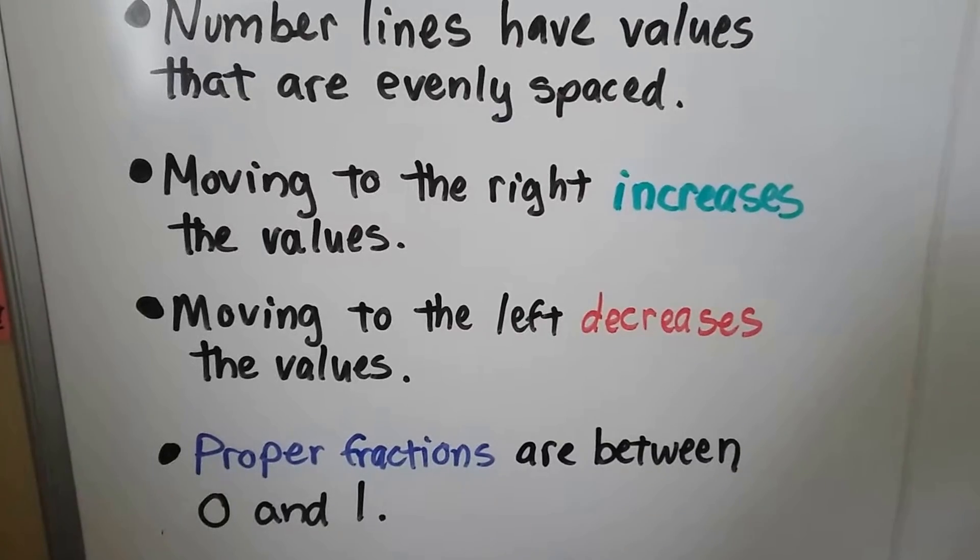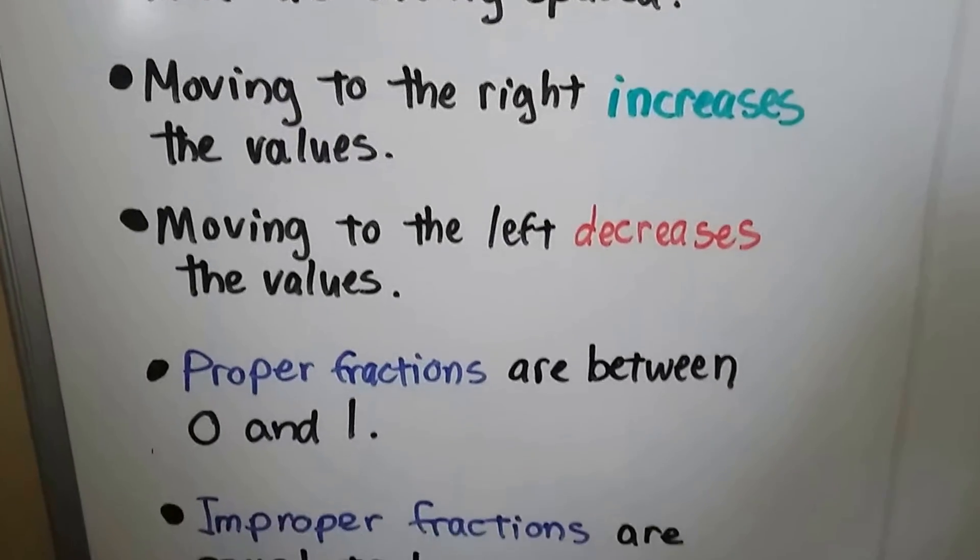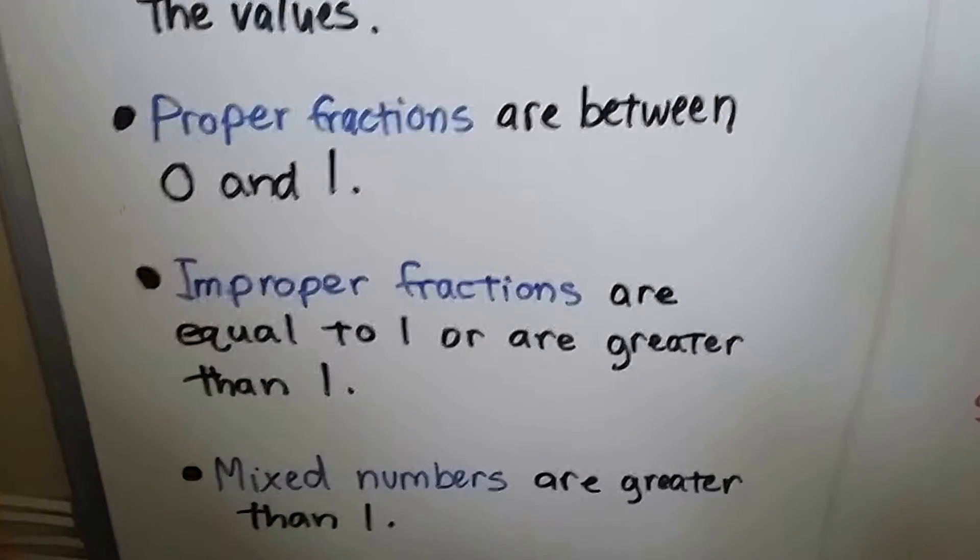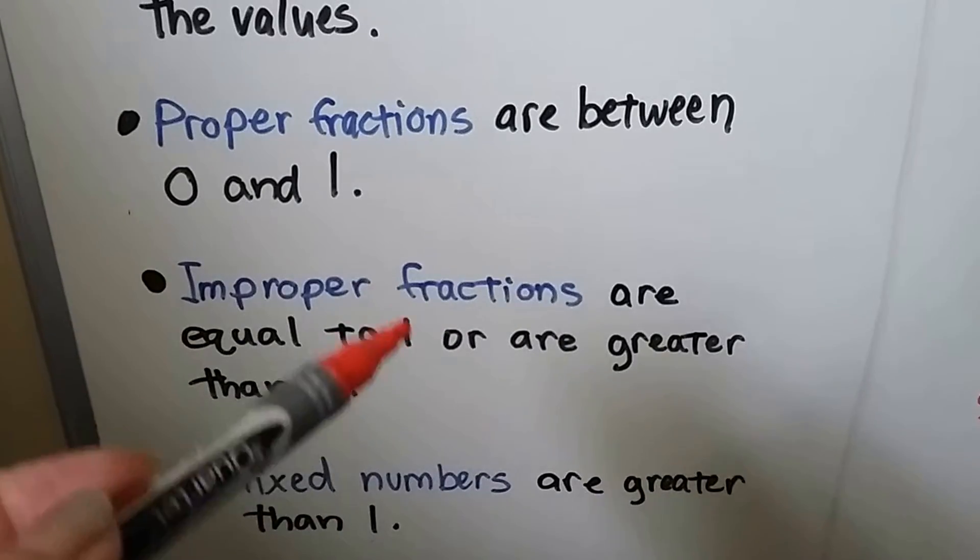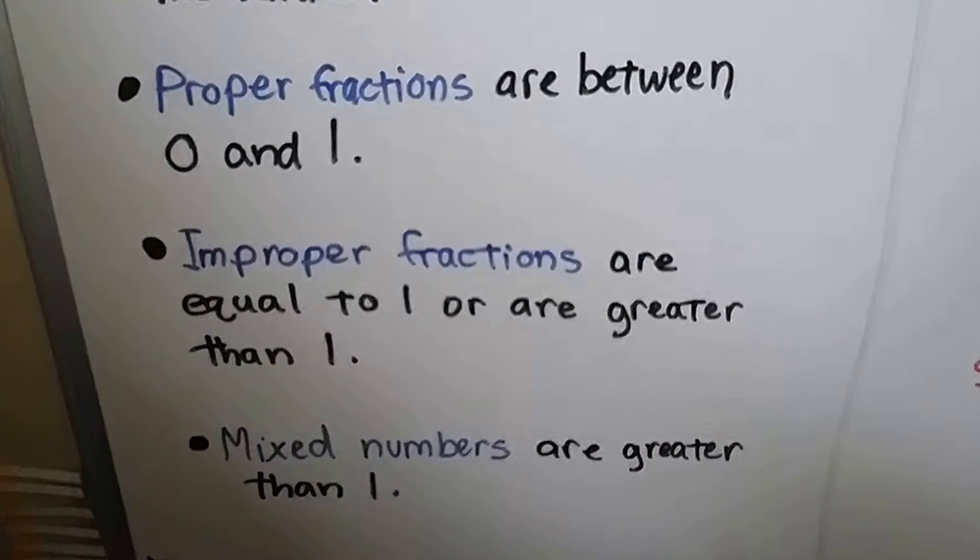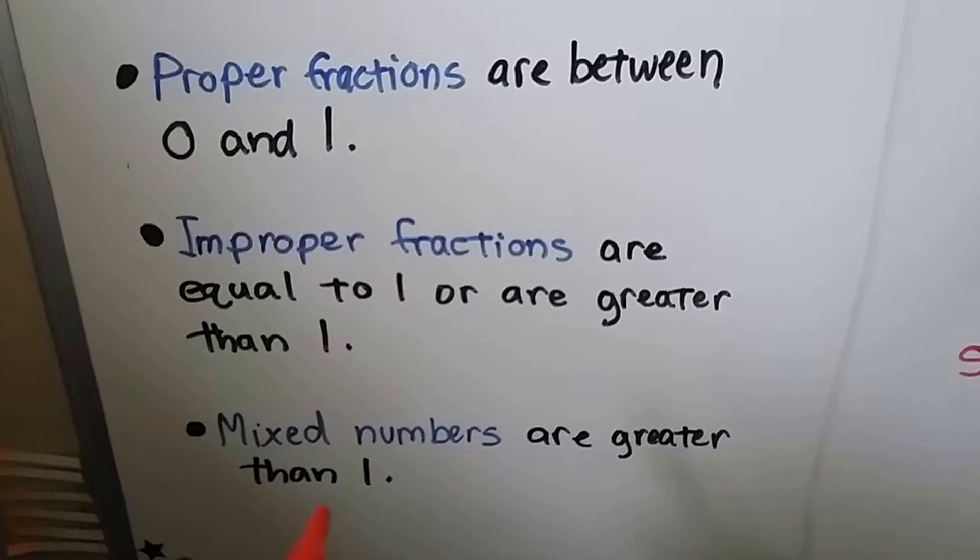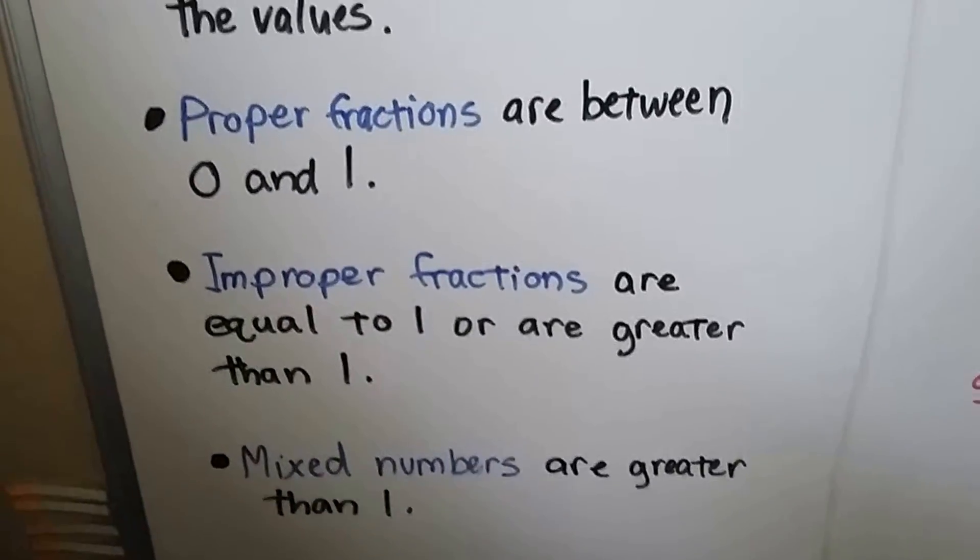Improper fractions are in between 0 and 1. We learned that in the previous videos. And improper fractions are equal to 1 or are greater than 1, so it could be 3 thirds or 4 thirds. And mixed numbers are greater than 1 because it's a whole number next to a fraction that makes the mixed number.